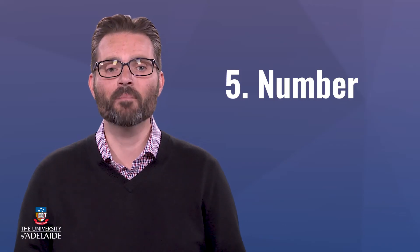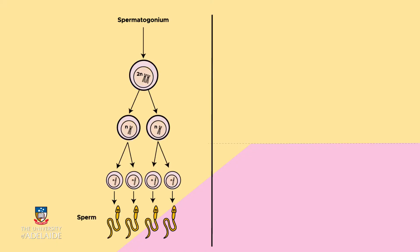Fact 5: number. The number of sperm and eggs produced from each stem cell after meiosis is different. In males, every stem cell — called a spermatogonium — gives rise to four sperm cells. This is important because it means that hundreds of millions of sperm can be quickly created and released in males.